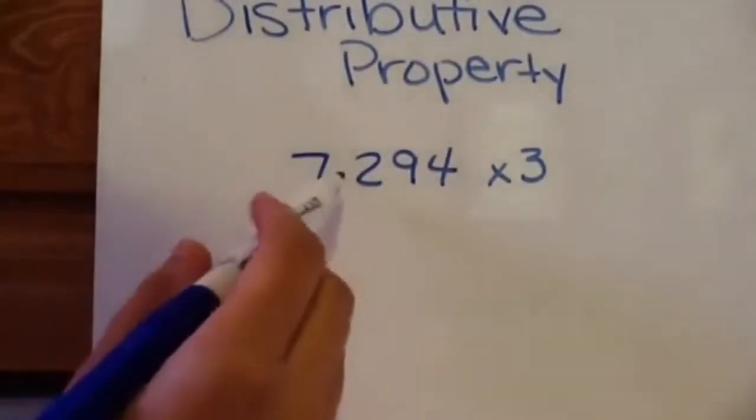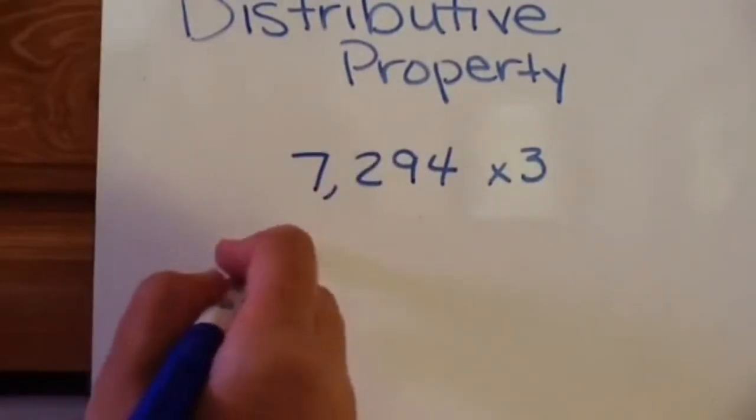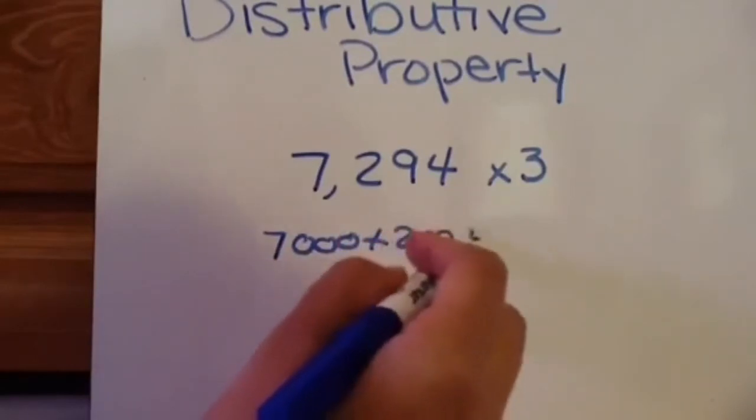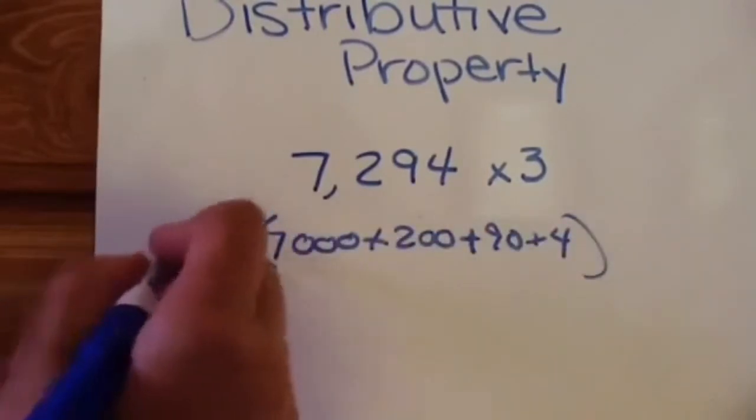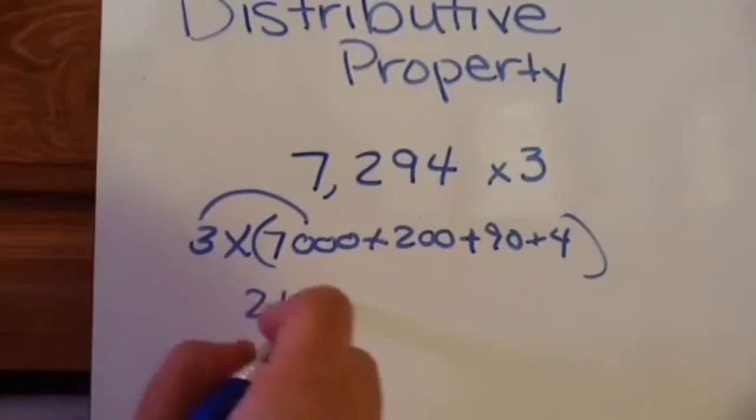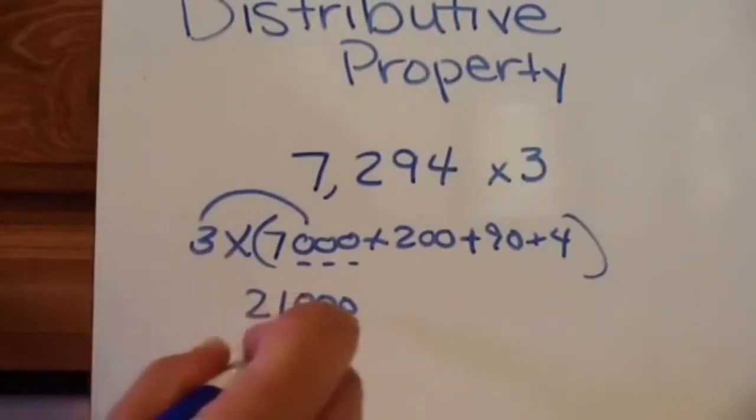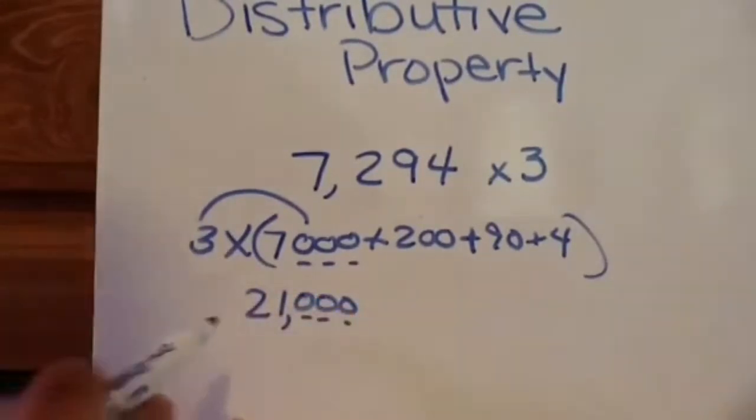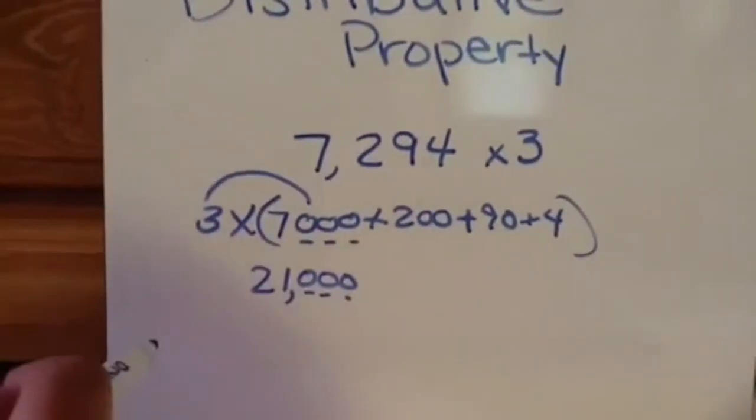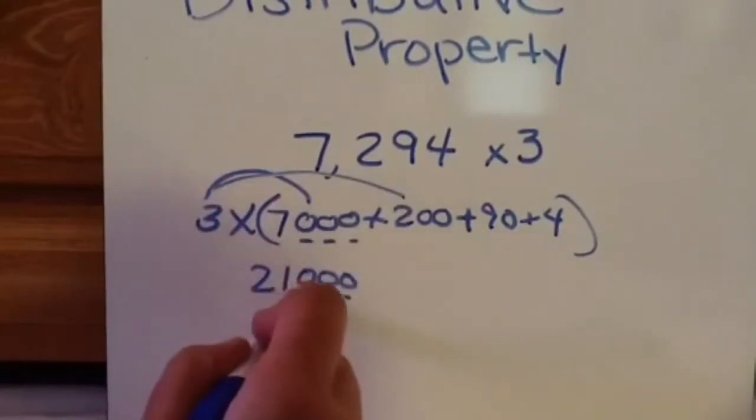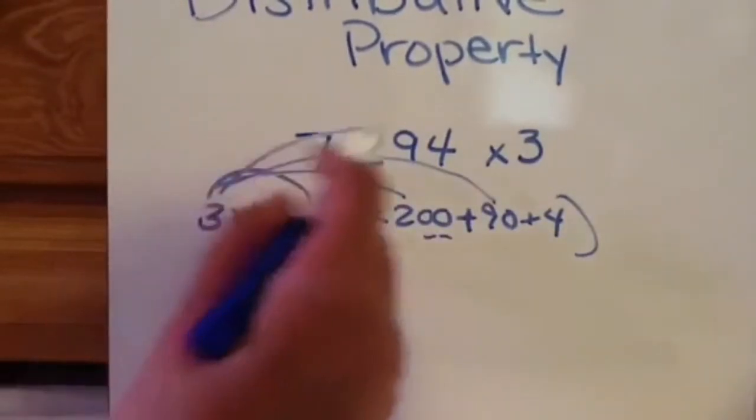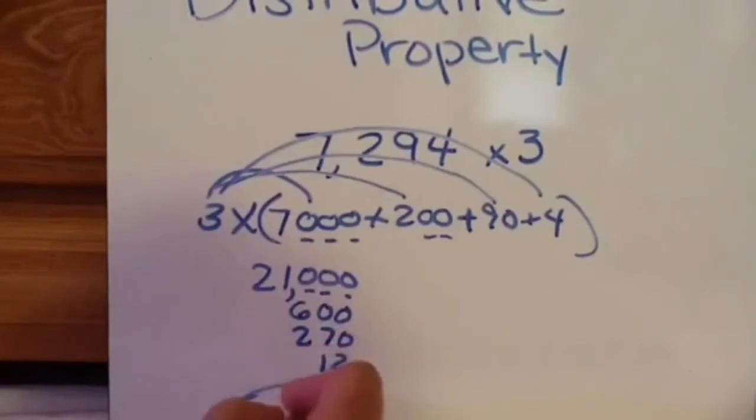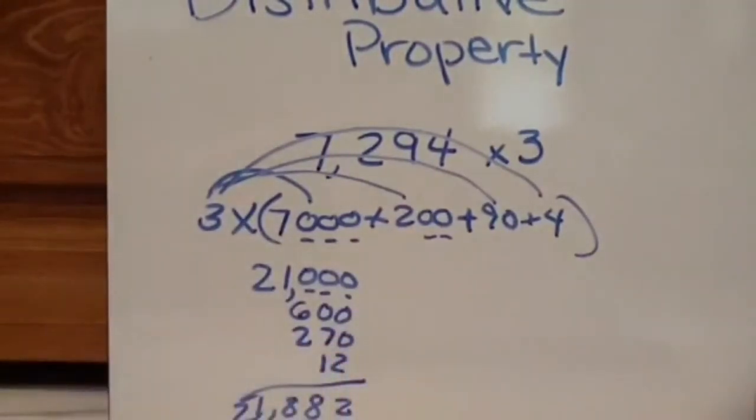Let's look at a larger number. So 7,294 times 3. So this would be 7,000 plus 200 plus 90 plus 4 times 3. So 3 times 7,000 would be 21,000. Make sure you count your zeros. I've had students get the wrong answer because they were off by one zero, and then obviously when you do the addition, then you don't get the correct answer. 3 times 200 is 600. 3 times 90 is 270. And then 3 times 4 is 12. So 21,882.